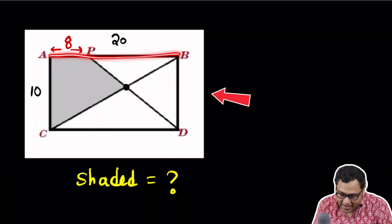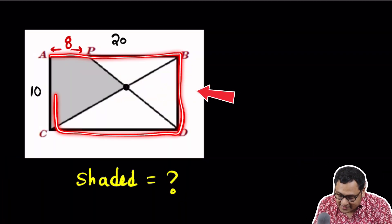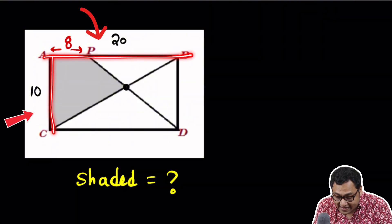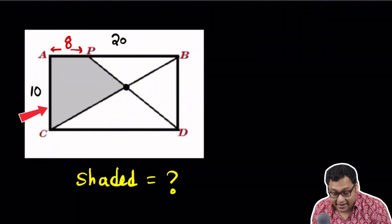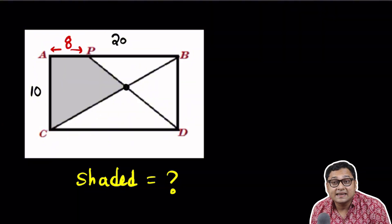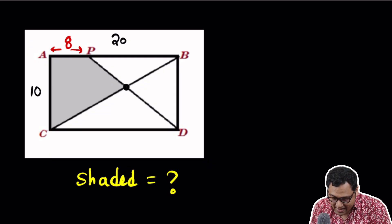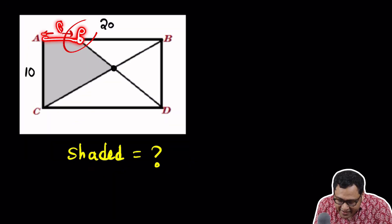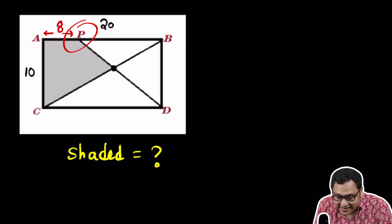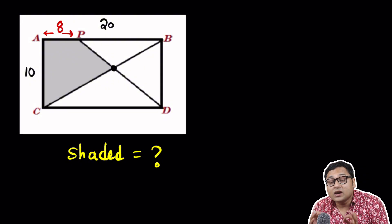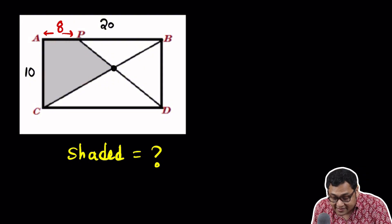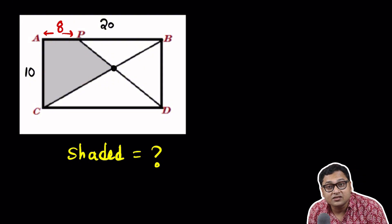So let's look at the problem first. It says that we have a rectangle ABCD with AB equals 20 and AC equals 10. It's also given that there is a point P here, and AP is 8. We want to find out the area of the shaded region.